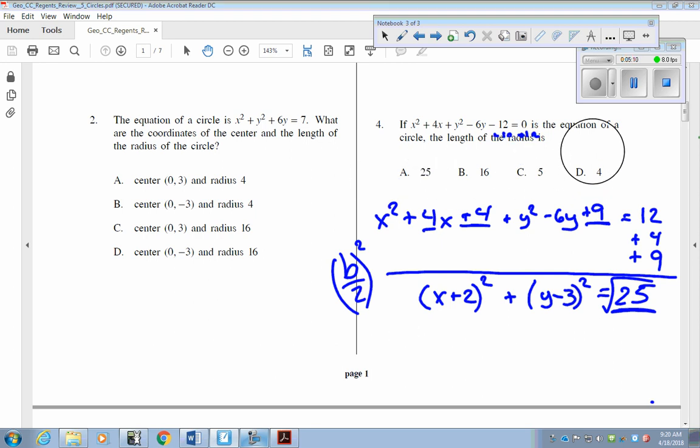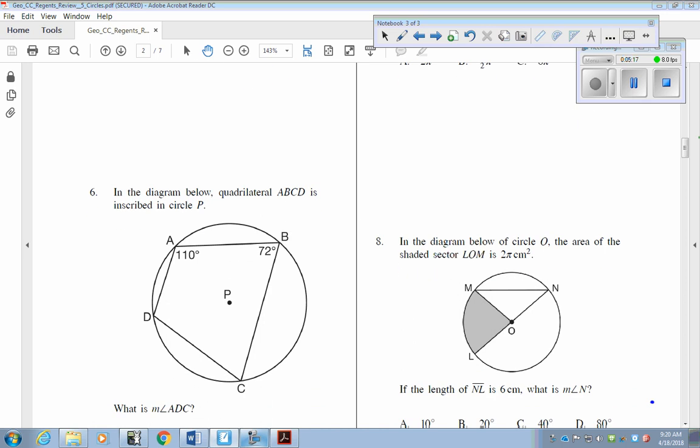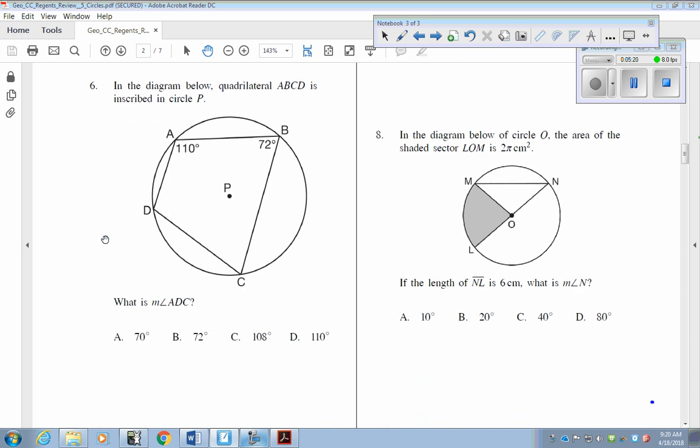Moving on from there, we're going to look at question 8. They got an area of the shaded sector, so they give us the area and we talked about this formula when we did the area unit. That's going to be x over 360, and x is our angle, times π r². They tell us the length of NL is 6, which is that diameter.